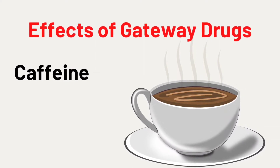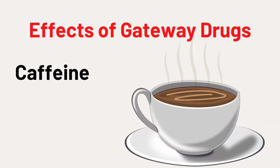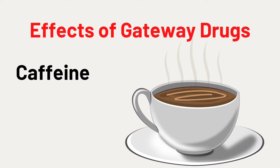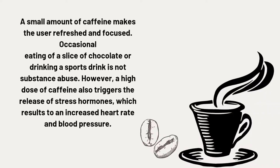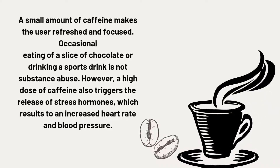Effects of gateway drugs — caffeine: aside from coffee, tea, and soft drinks, other products also contain caffeine, such as iced tea, energy drinks, and even cocoa like chocolate. Caffeine is a drug because it affects the body. When adults consume products containing caffeine, they feel more alert or awake because it is a stimulant drug that affects the brain and central nervous system, as well as the heart, blood vessels, and kidneys.